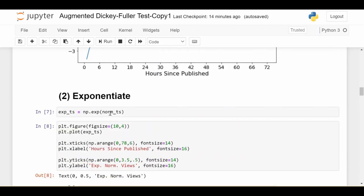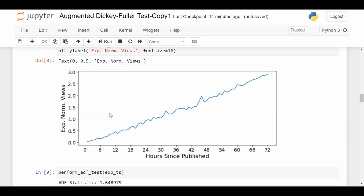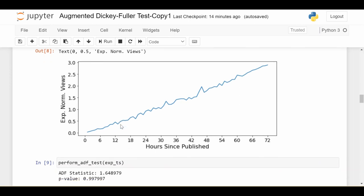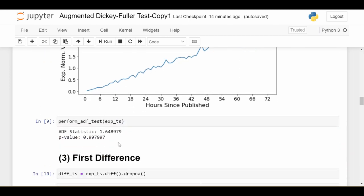We do e to the power of that normalized series. As we predicted, we got this kind of linear straight growth, which is a lot easier to manage. Again, this is not stationary. I'm doing the Dickey-Fuller test, which checks whether a time series is stationary.